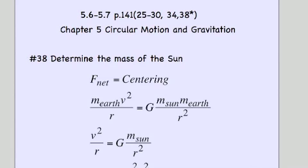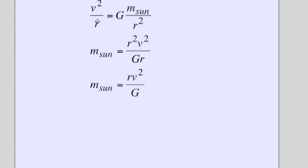I'm not sure if you guys are going to be able to see this, so just to make sure you can see what I got: mass of the Sun, R squared, V squared over GR.